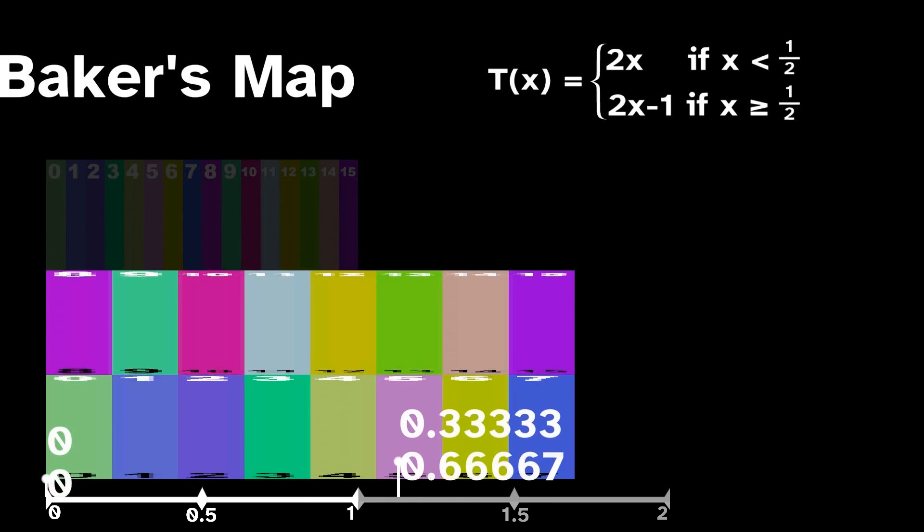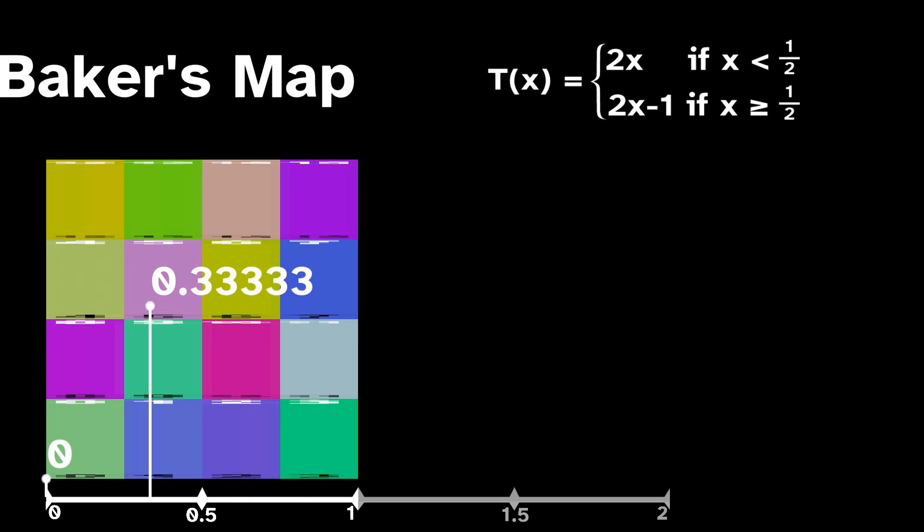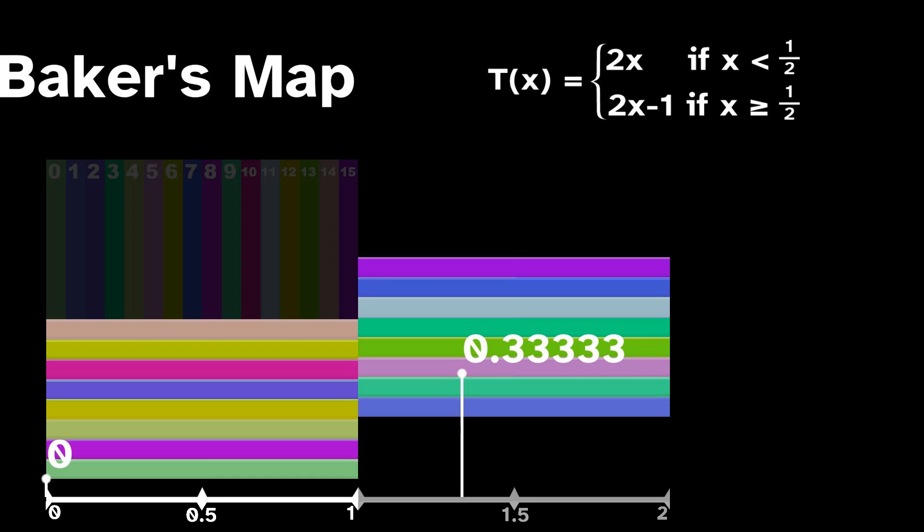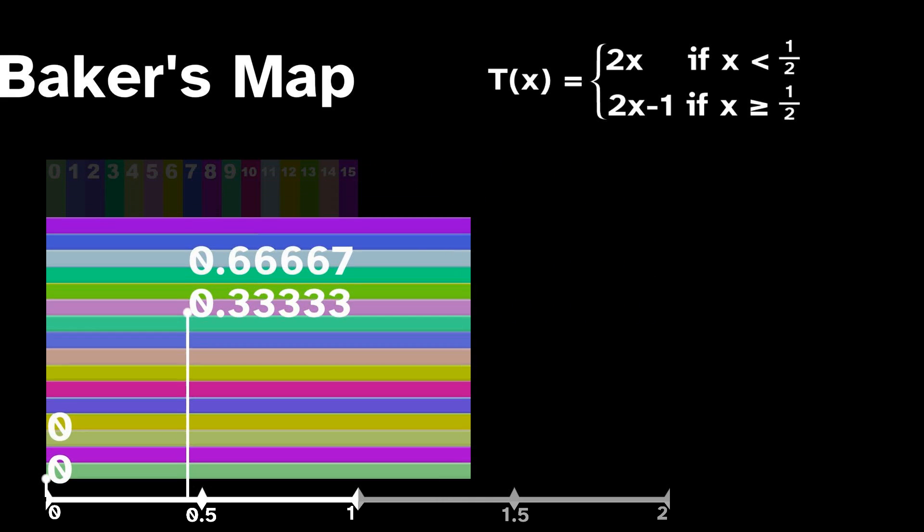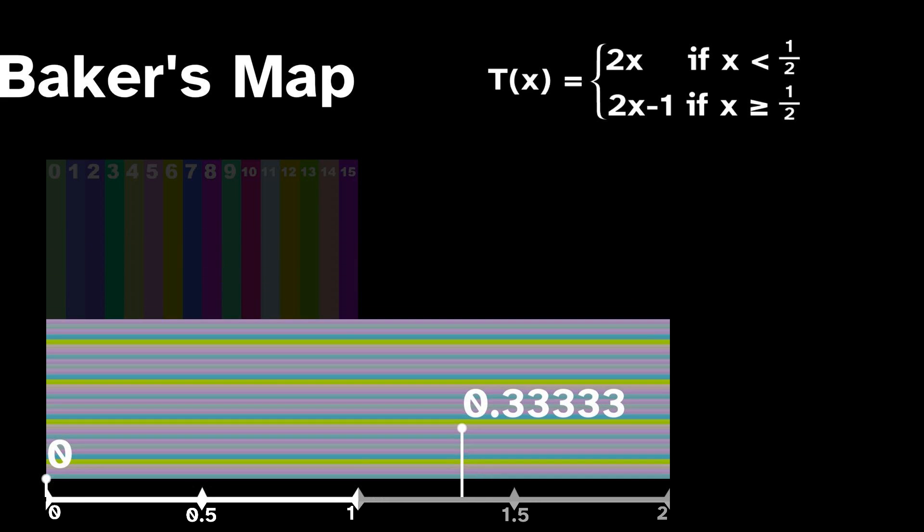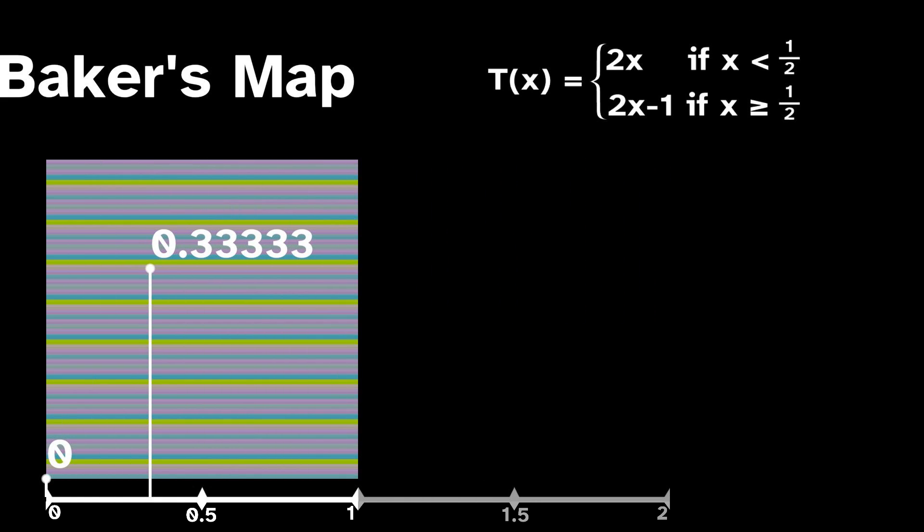Depending on the point you pick, we'll see all sorts of different possible trajectories. For instance, the point 0 stays right where it is. No matter how many times we iterate, this is called a fixed point. The point 1 third goes to 2 thirds, then back to 1 third. A point that eventually returns to where it started is called periodic, and the number of iterations needed to return a point to where it started is called its period.